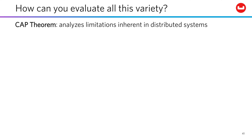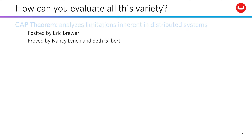The CAP theorem analyzes limitations that are structurally inherent to distributed systems. It was first posited by Eric Brewer, and then later proved mathematically by Nancy Lynch and Seth Gilbert. In the context of database technology, the CAP theorem looks at three factors.